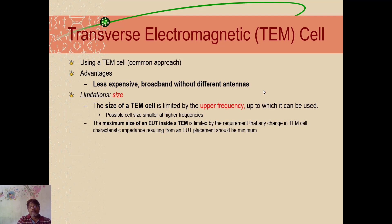And then the next comes the limitations. What is the limitation? Size is the limitation. The size of the TEM cell is limited by the upper frequency up to which it can be used. Possible cell size will be smaller for higher frequencies. Lambda and frequencies are inversely proportional. If higher frequency, Lambda will be smaller, so your TEM cell size will also be very smaller.